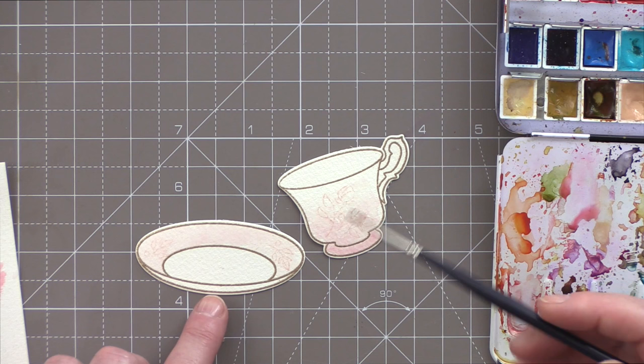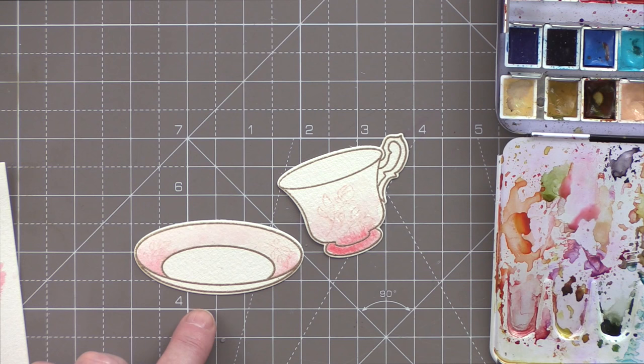I'm starting out with a very light wash of Daniel Smith Quinacridone Coral which is a lovely pink color and I'm making sure that I give the deepest tones to the bottom of the teacup and to the edges of the saucer.